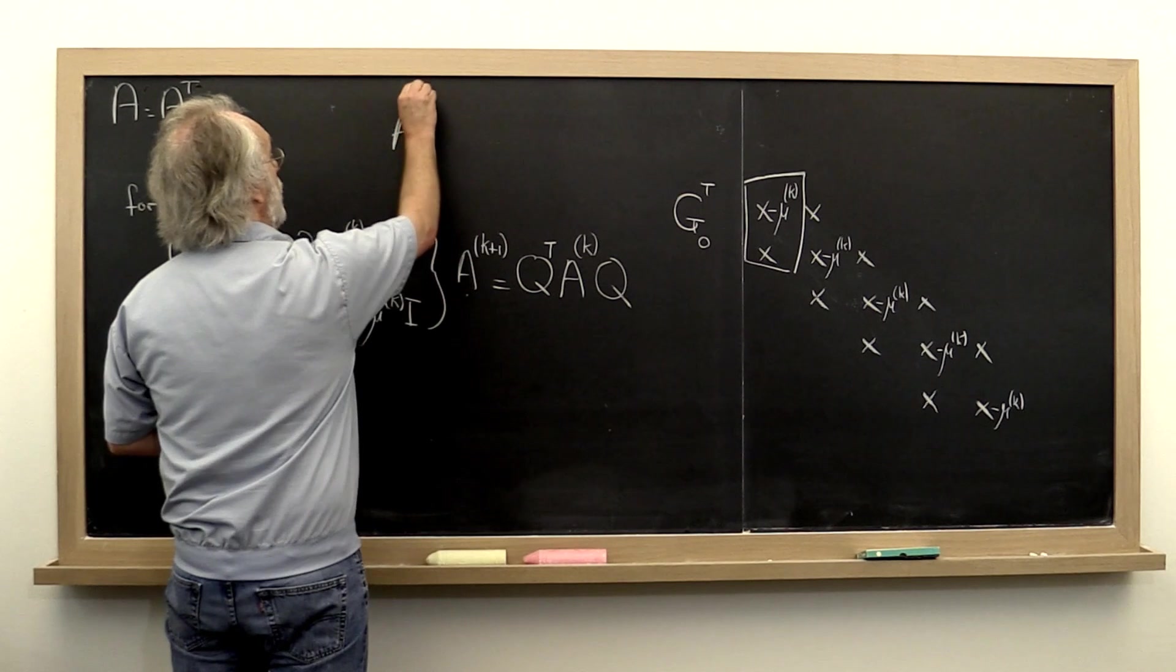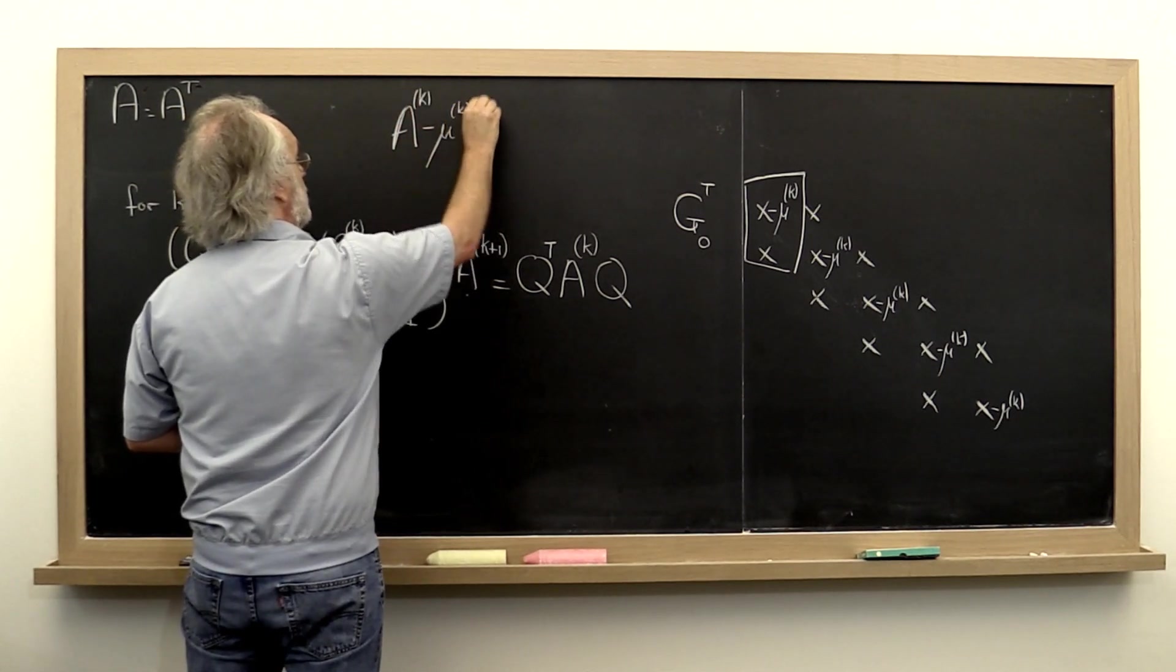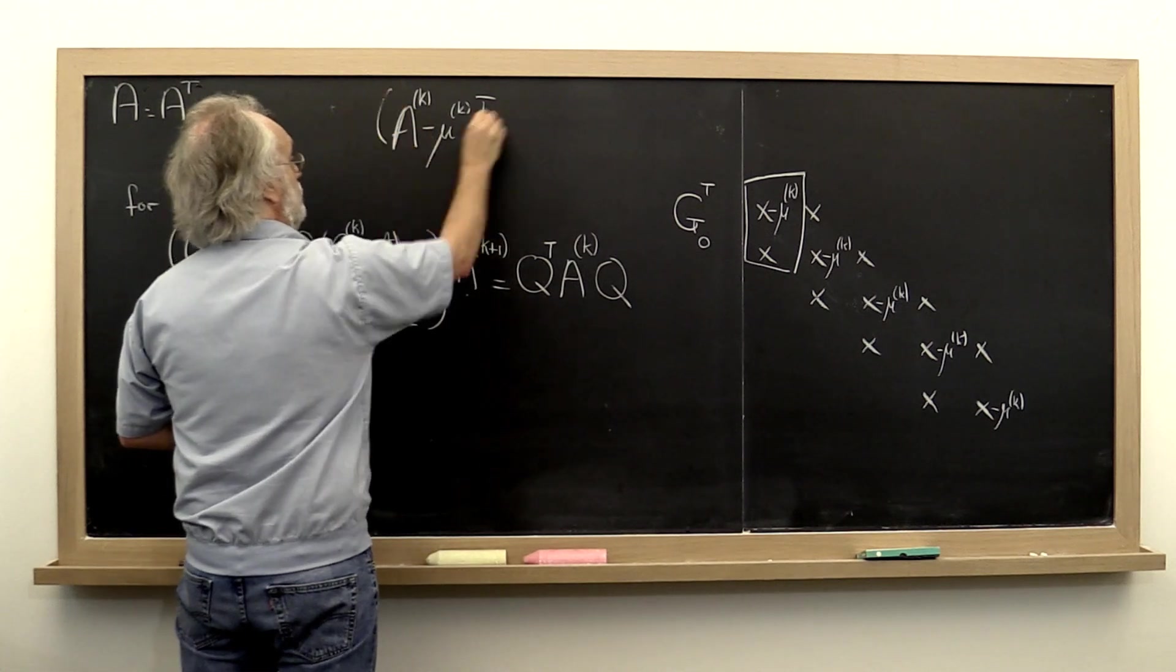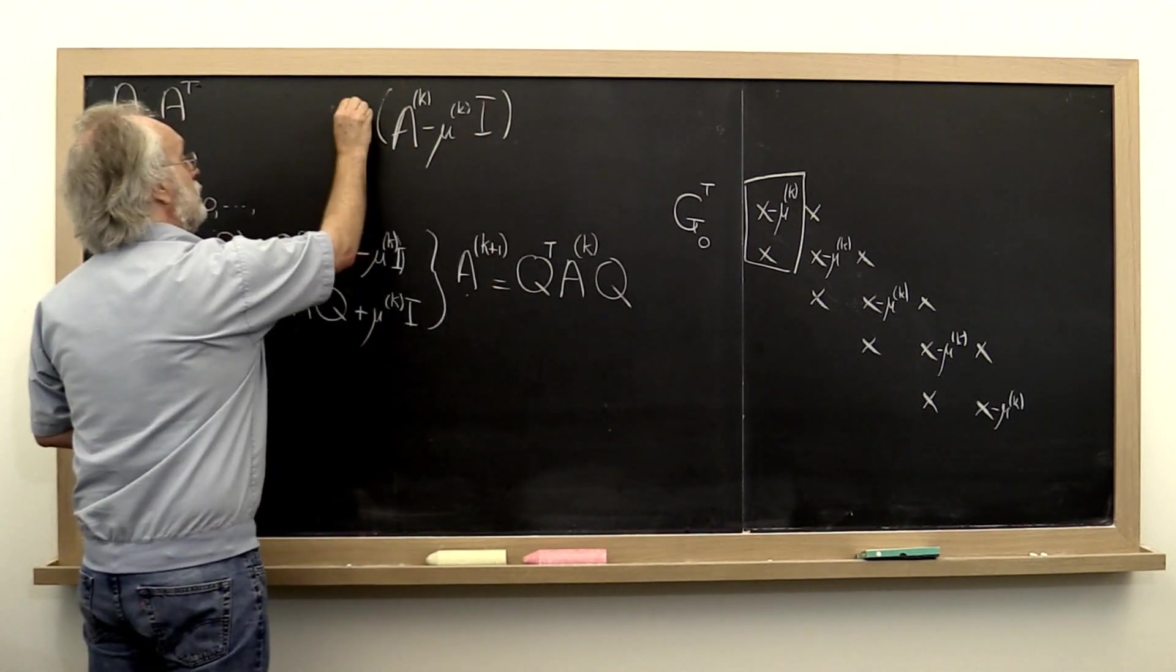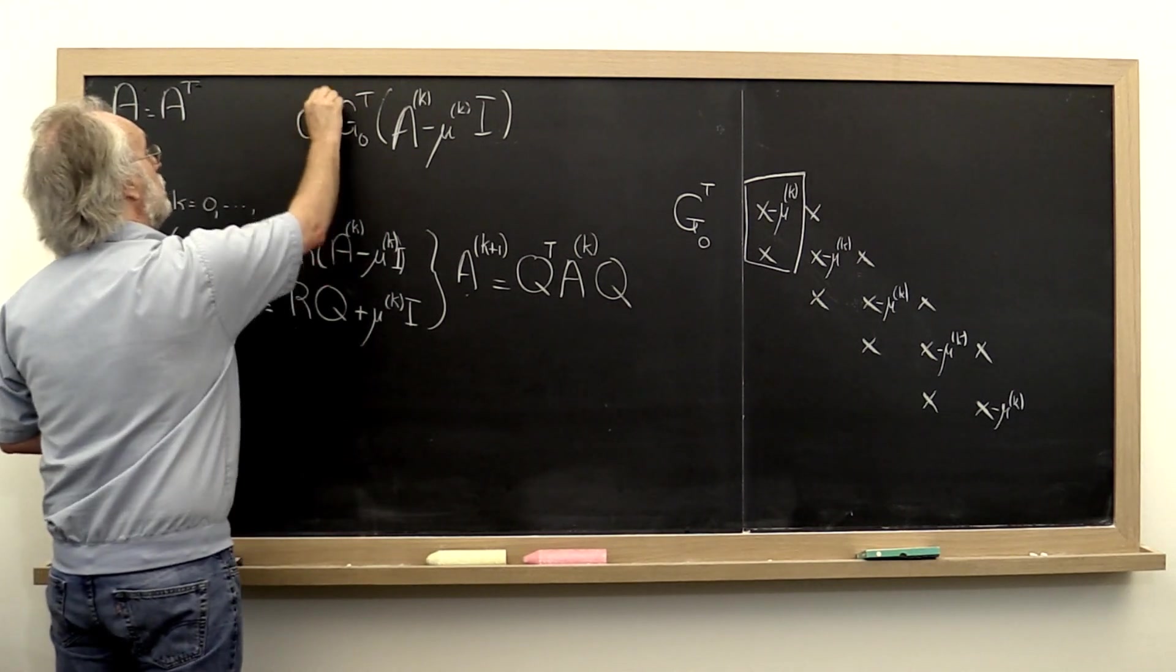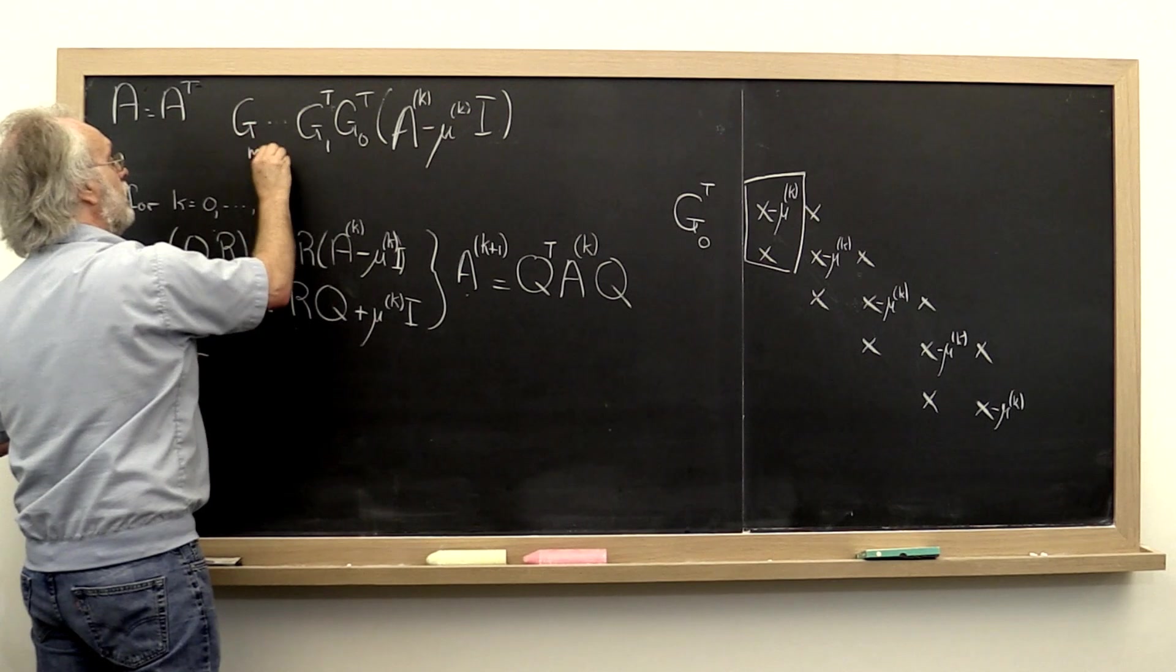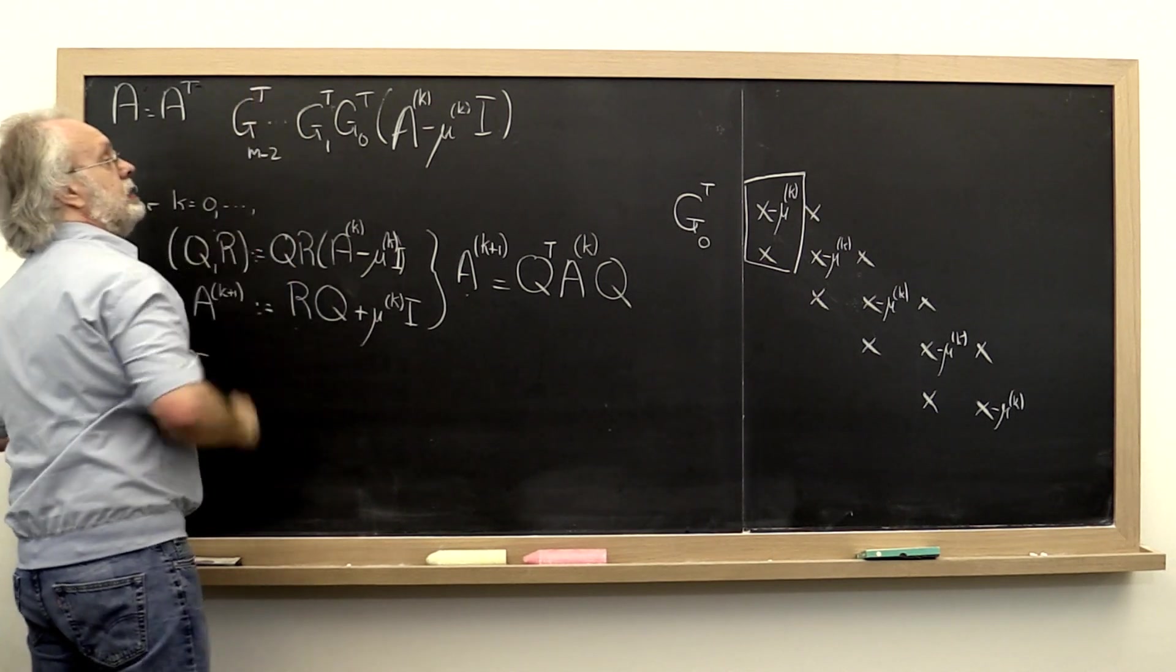So how can we summarize that? We start with A k minus mu k times the identity. Then we compute a bunch of Givens rotations and apply those from the left, however many there are, probably M minus 2.